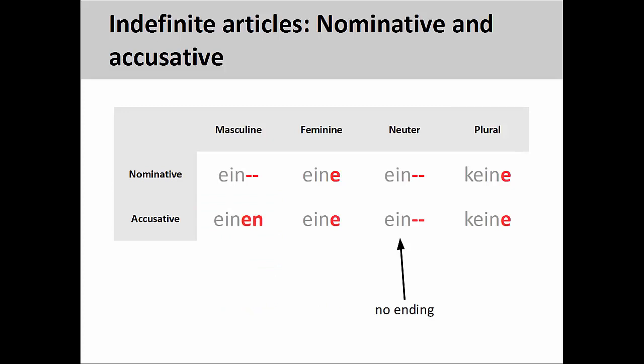Unlike the definite article pattern, however, the neuter indefinite article does not take an ending in the accusative case. This sometimes makes it difficult to determine the gender and case of the noun.